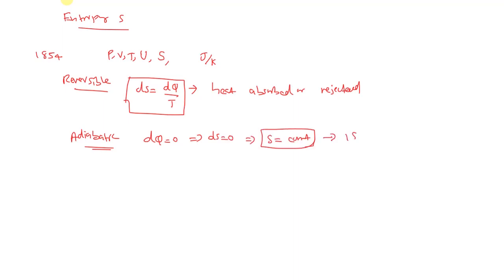So an adiabatic process is said to be an isentropic process. Just as a process in which temperature is constant is called an isothermal process, since entropy is constant here, we call it an isentropic process. So all adiabatic processes are isentropic processes. Entropy can be defined as that physical quantity which remains constant when the substance undergoes a reversible adiabatic process.